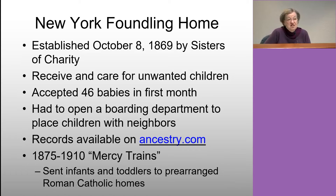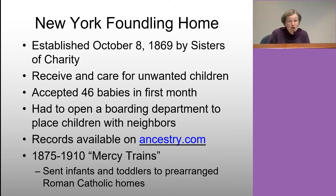Let's look at some records that might exist. The New York Foundling Home was established in 1869 and designed to receive and care for unwanted children. In the first month it operated, 46 babies were placed there. The following month they had so many children they had to open a boarding department and place children with neighbors. The New York Foundling Home records are available on Ancestry.